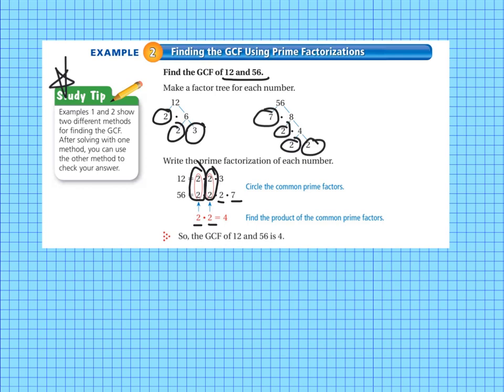So we only have two 2s that match up. So we have a group of 2s and another group of 2s, so we multiply those together. One group of 2s, the other group of 2s, 2 times 2 equals 4. So we find the product of the common prime factors.